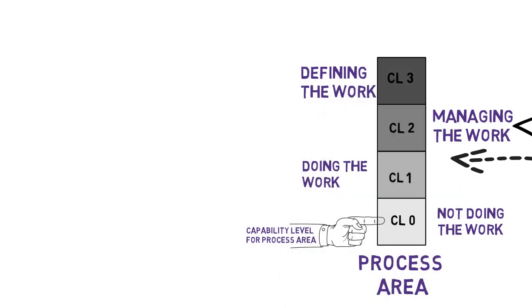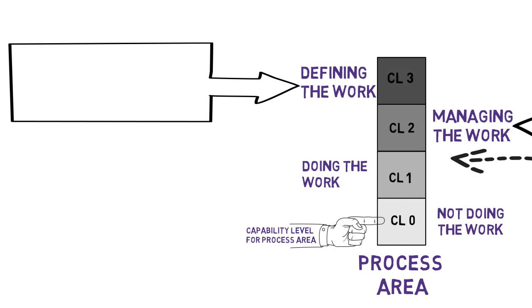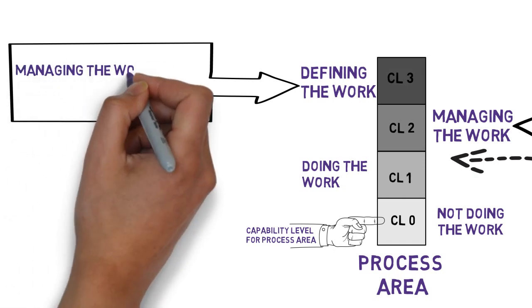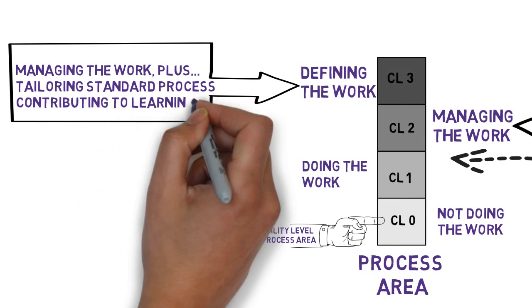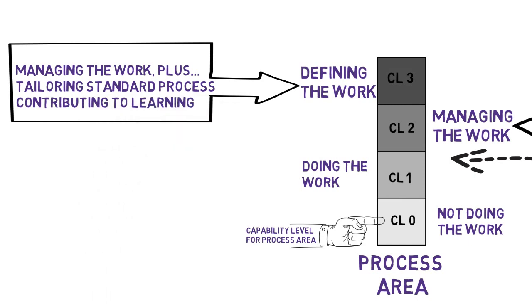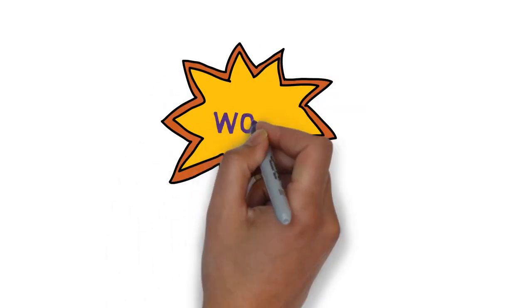Level three is a managed process that now enables the organization to learn from all the project's experiences. By this time there are usually some standard processes and approaches to doing and managing work in place and ways to modify them for specific project needs. And the projects are gathering data and learning that's available to other projects and the organization for overall improvement. This is when projects can now benefit not just from their own experience but that of other projects as well. And that's powerful.